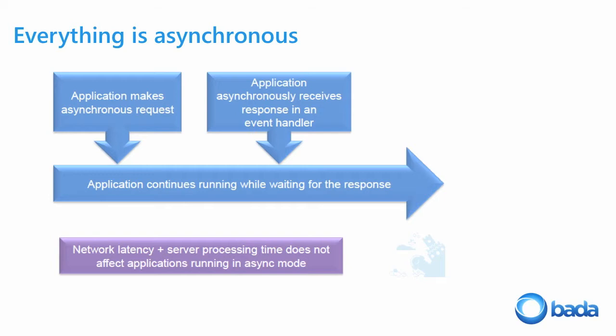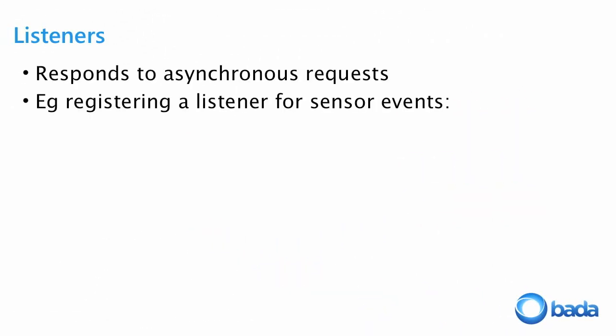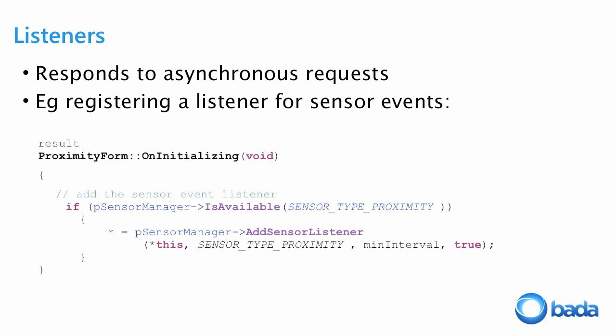So how is that done in Bada? We use listeners and we register a listener for a particular event. In this case, we have the proximity sensor — the sensor that detects when you hold your phone up to your ear to switch off the screen. Here we're checking to see if the proximity sensor is available and then we're adding a listener. We're calling addSensorListener and we're passing 'this', so we're passing the form to that method.